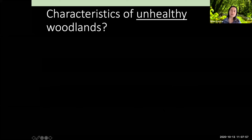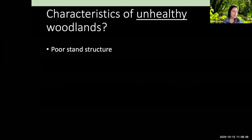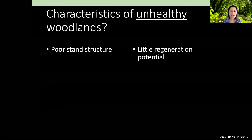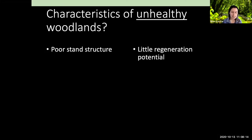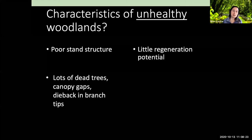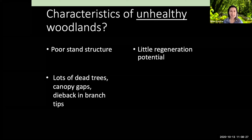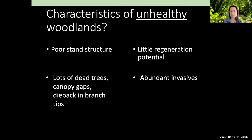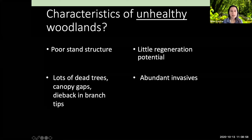On the flip side, characteristics of unhealthy woodlands are the inverse of everything I just mentioned: poor stand structure where all trees are in the same age class, little regeneration potential or seedlings that aren't the trees you want long-term, lots of dead trees with canopy gaps and dieback in branch tips — signs those trees are stressed. Abundant invasives are also a concern; these can be invasive insects and diseases directly impacting trees, as well as invasive plants changing those systems in ways that are less supportive of healthy, resilient woodlands.